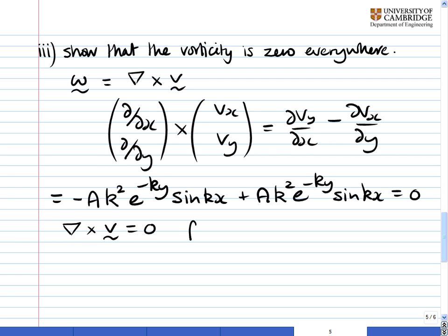In other words, the flow is what we call irrotational. Now this has very important consequences for Bernoulli's equation that you can find in the lecture notes. For interest, you might like to work out where the pressure will be highest and where it will be lowest, and then in fact derive an expression for the pressure, noting that V is much larger than a times k, so some terms will be much bigger than others.